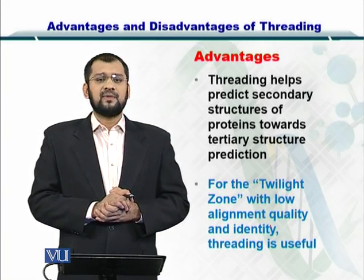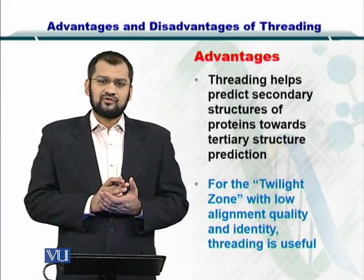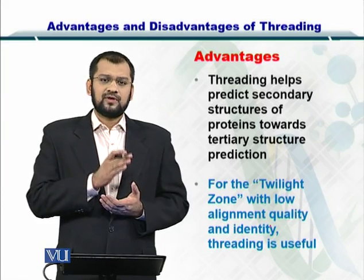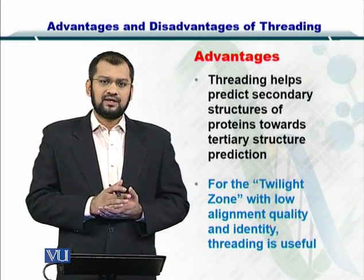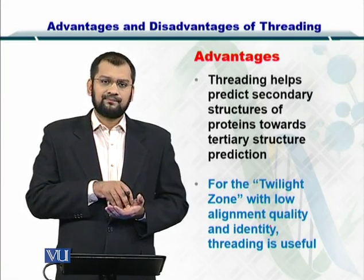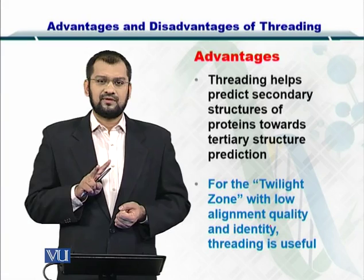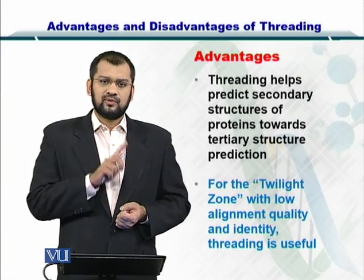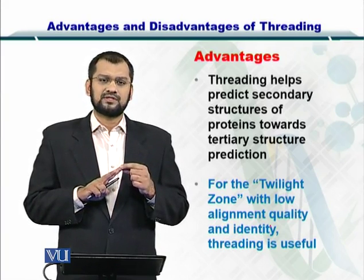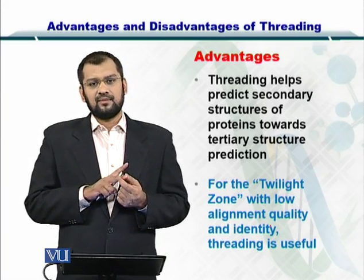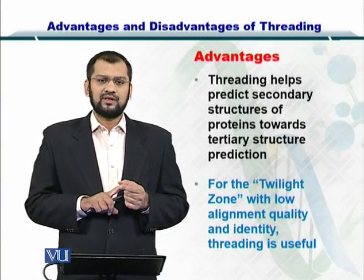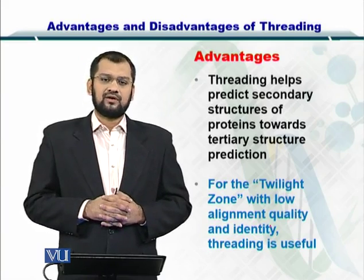As just mentioned, for the twilight zone in the alignment versus identity graph — where there is low alignment and low identity — you only have two options. You cannot use homology modeling. The two options available are fold recognition or threading, versus ab initio modeling. Between these two, threading is the simpler option and is more accurate as well.